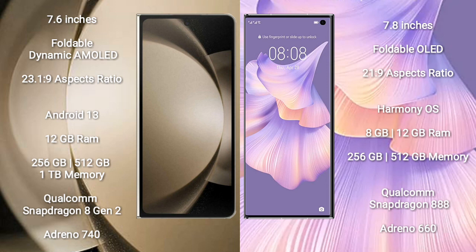Samsung Galaxy Z Fold 5 comes with 12GB RAM and 256GB, 512GB, or 1TB internal storage, a Qualcomm Snapdragon 8 Gen 2 processor and GPU Adreno 740. Huawei Mate XS2 comes with 8GB or 12GB RAM and 256GB or 512GB internal storage, a Qualcomm Snapdragon 888 processor and GPU Adreno 660.